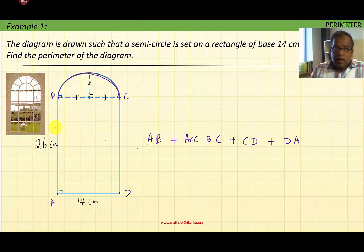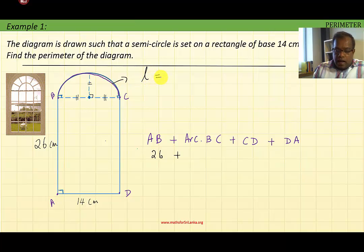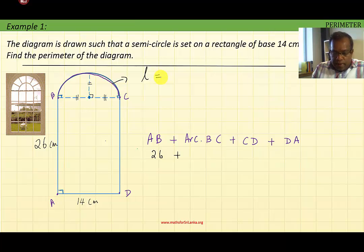AB is 26 centimeters, and we don't know the arc of BC, so we're going to find the arc length of BC. We know arc length L is given by the angle at the center divided by the angle around the center, times 2πr. But here it's a half circle, so clearly the arc length is one half of the circumference, which is 2πr.